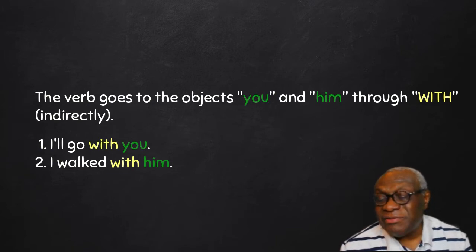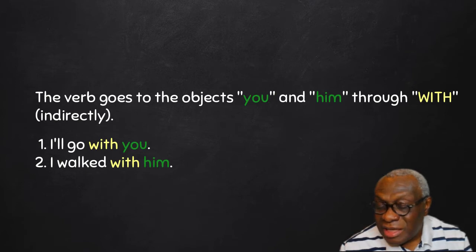So when you can identify a preposition between the verb and the object, then you have an indirect object.